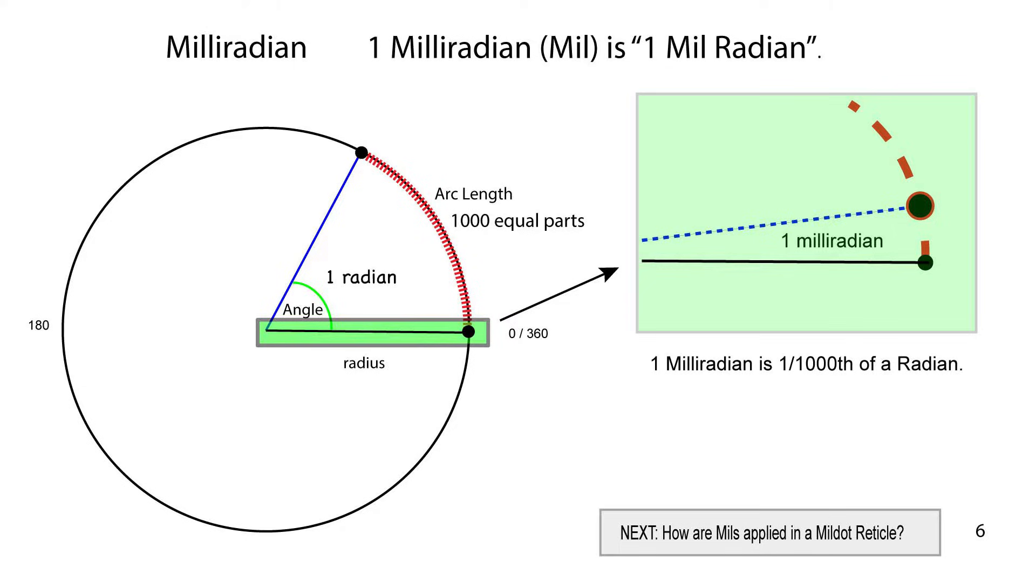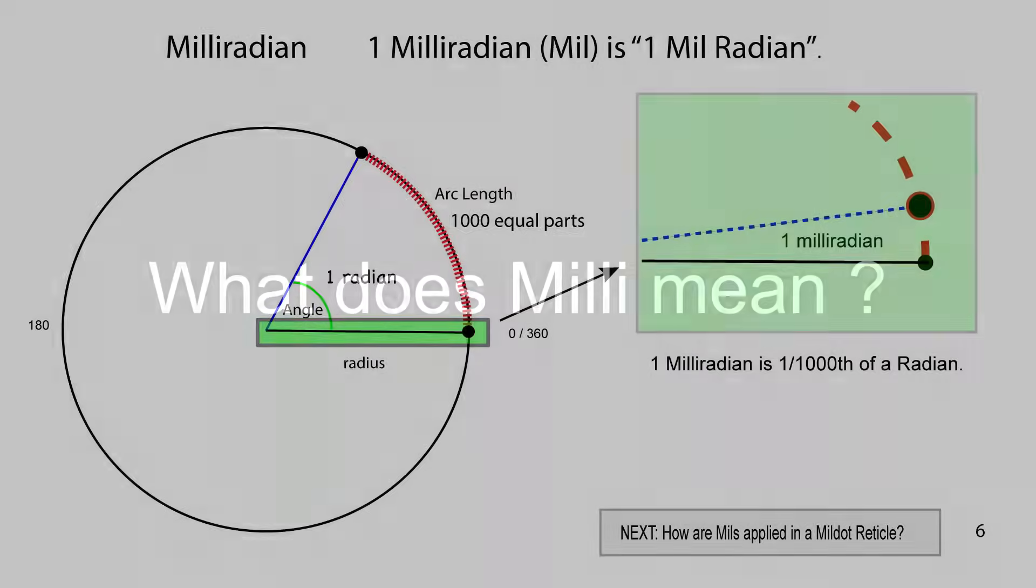So we are taking one thousandth of a radian, which is one milliradian. So one milliradian, abbreviated mil, is one milliradian.